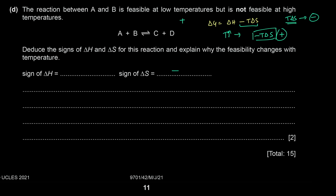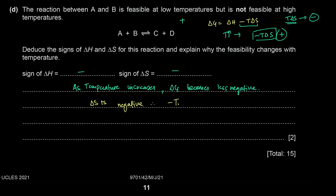Explain why feasibility changes with temperature. As temperature increases, ΔG becomes less negative (more positive) because ΔS is negative, so −TΔS is positive and becomes more positive as T increases. At some temperature, ΔG crosses zero and becomes positive, making the reaction infeasible.